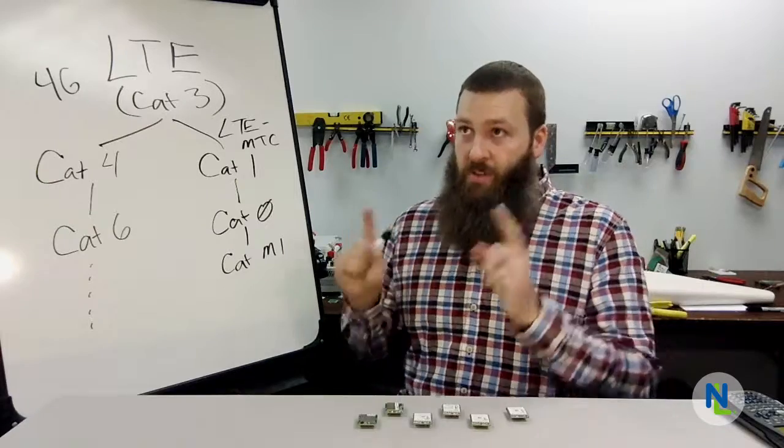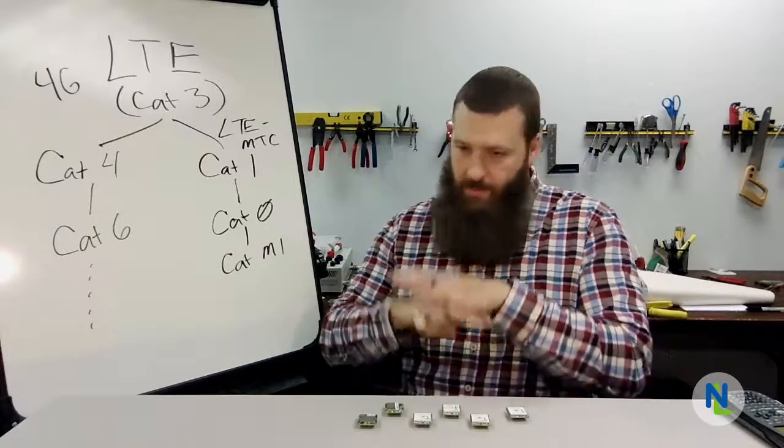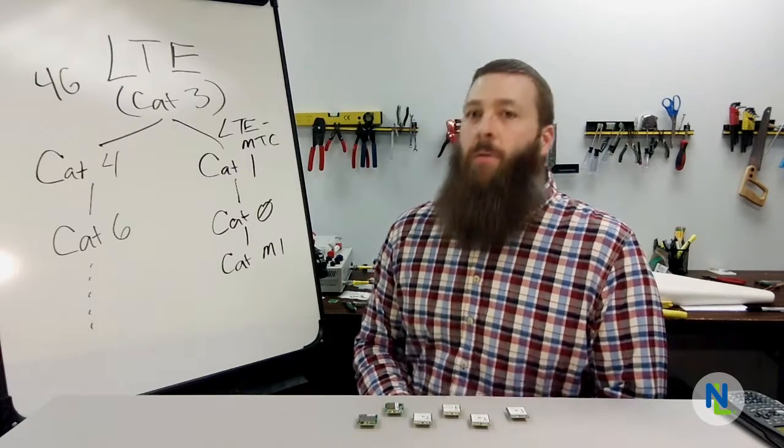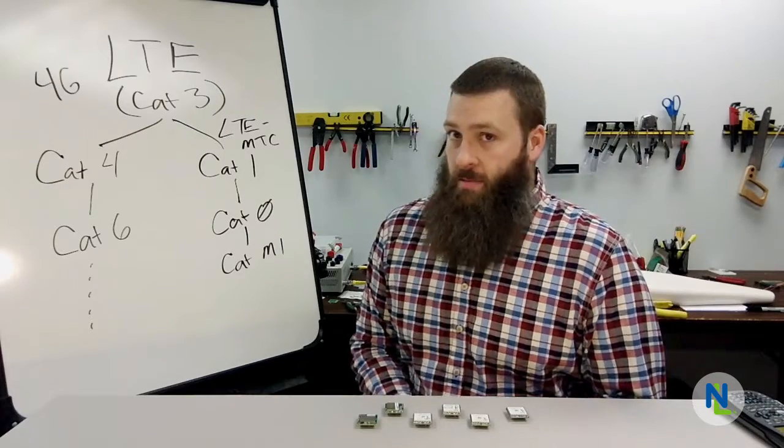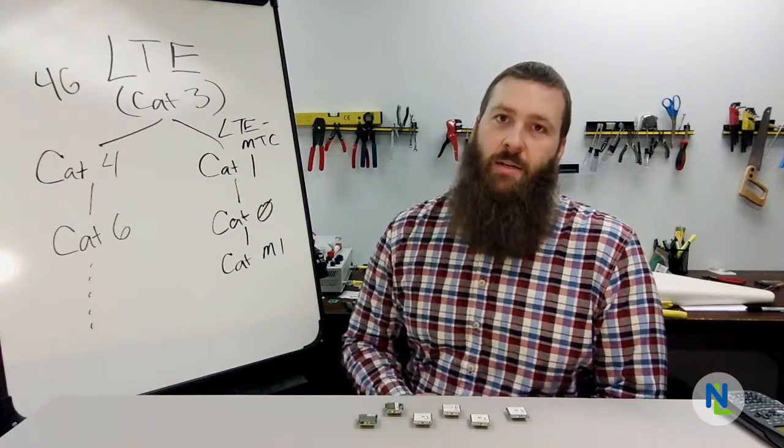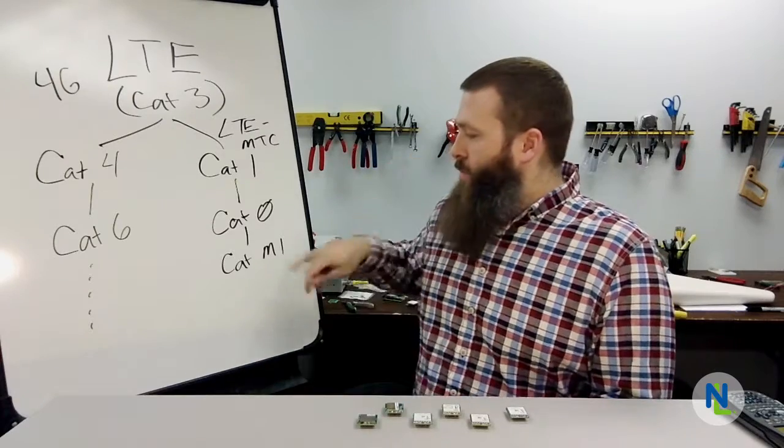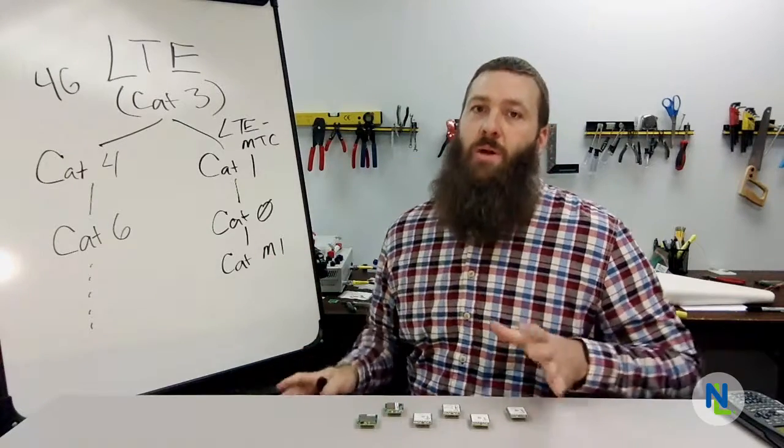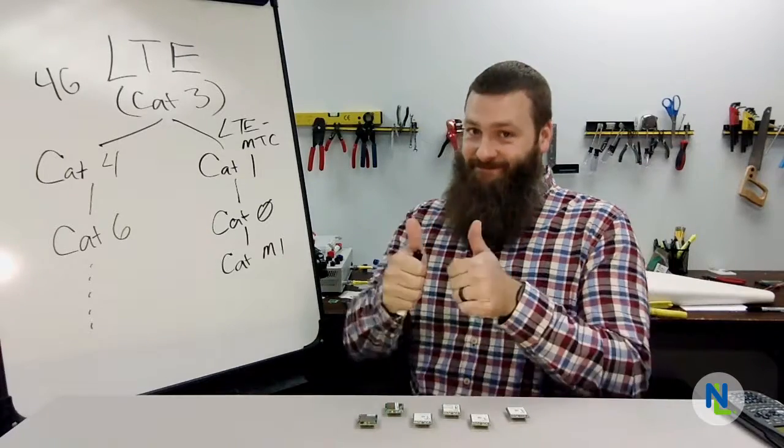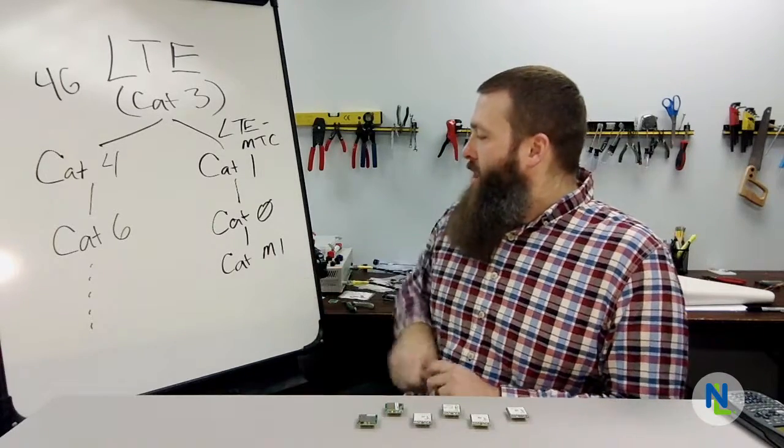Cat M1, first availability, first peak of a real world deployment of Cat M1 is expected to be here in the United States by the end of this year. For those of you watching this in the future, this year is 2016. So by the end of 2016, we will see Cat M1 networks. Guess what? We're also going to see a Cat M1 Skywire. Cat M1 is coming.